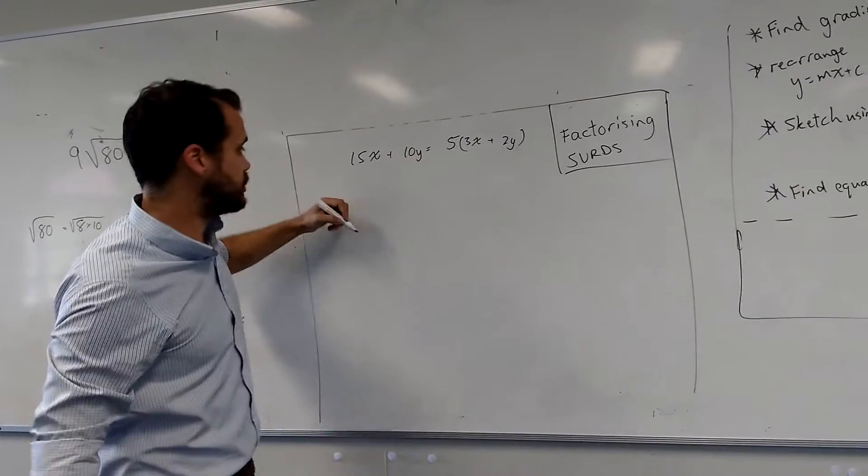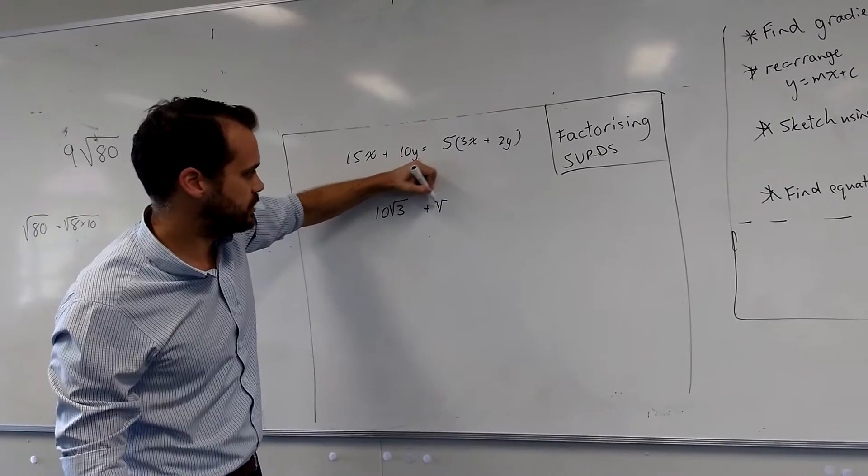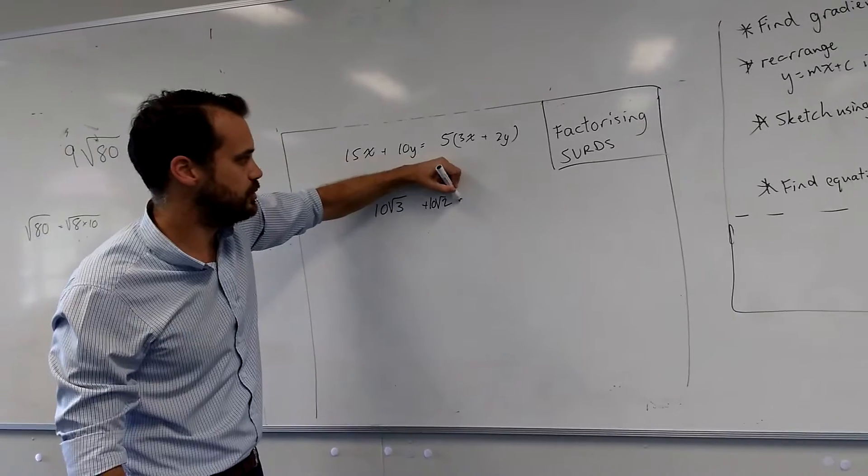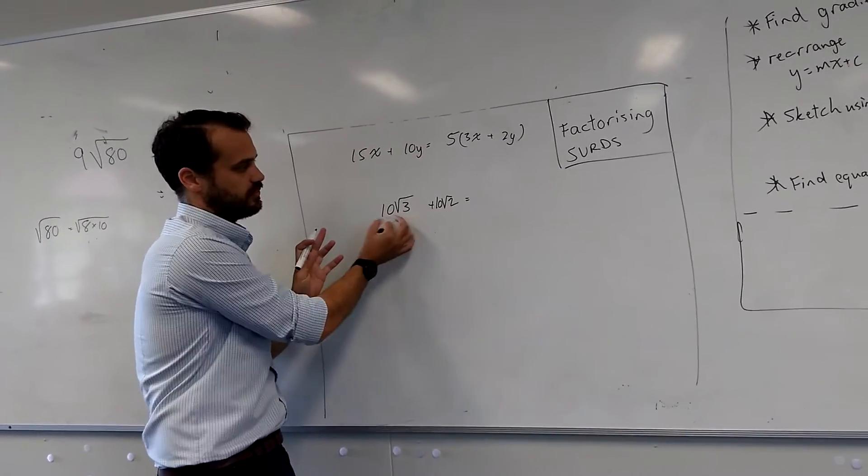If you want to factorize a surd, it's the same kind of thing. So if you see something like 10 root 3 plus 10 root 2, you can factorize it because you can see that they've both got a common factor of 10.